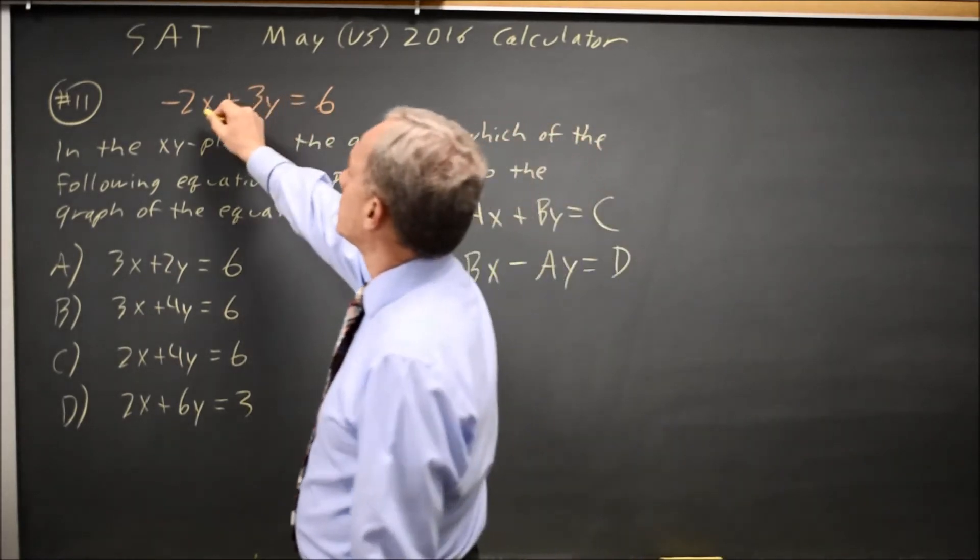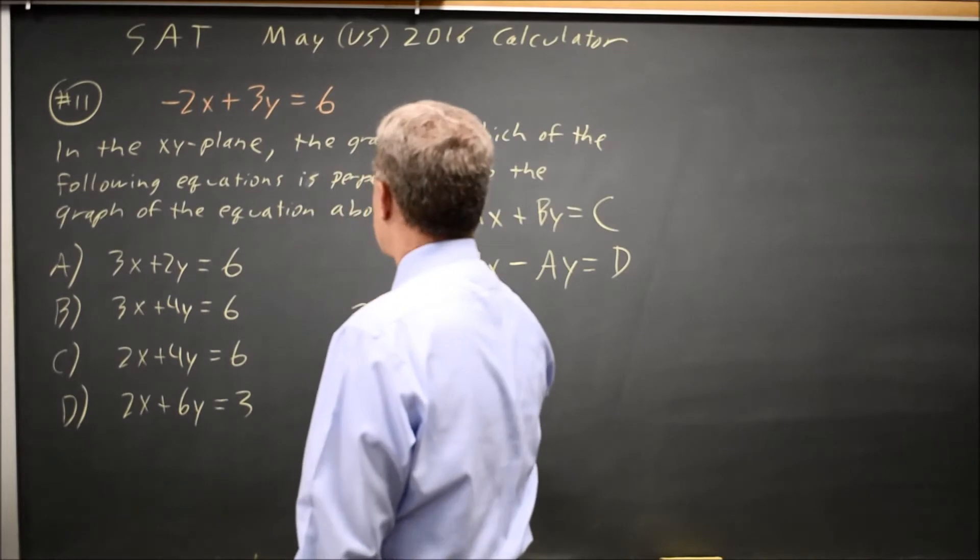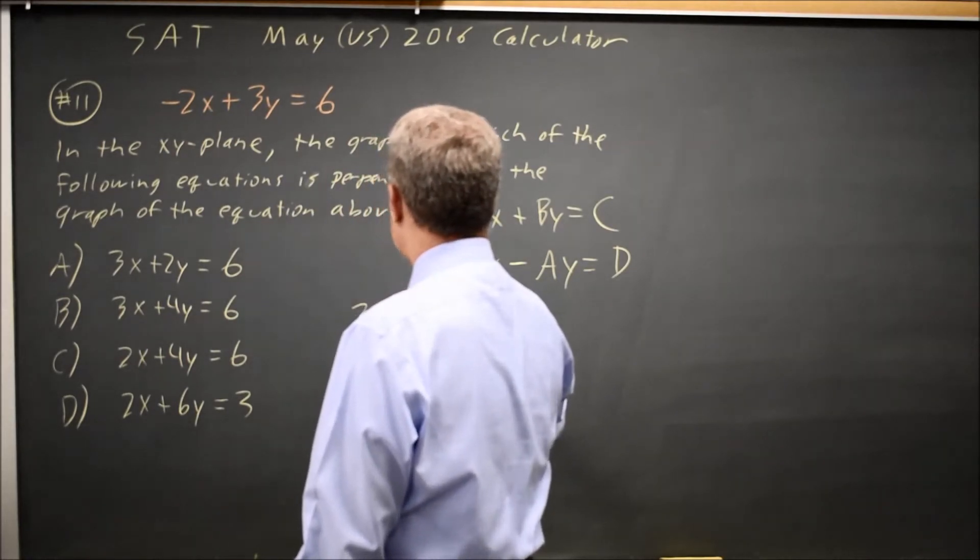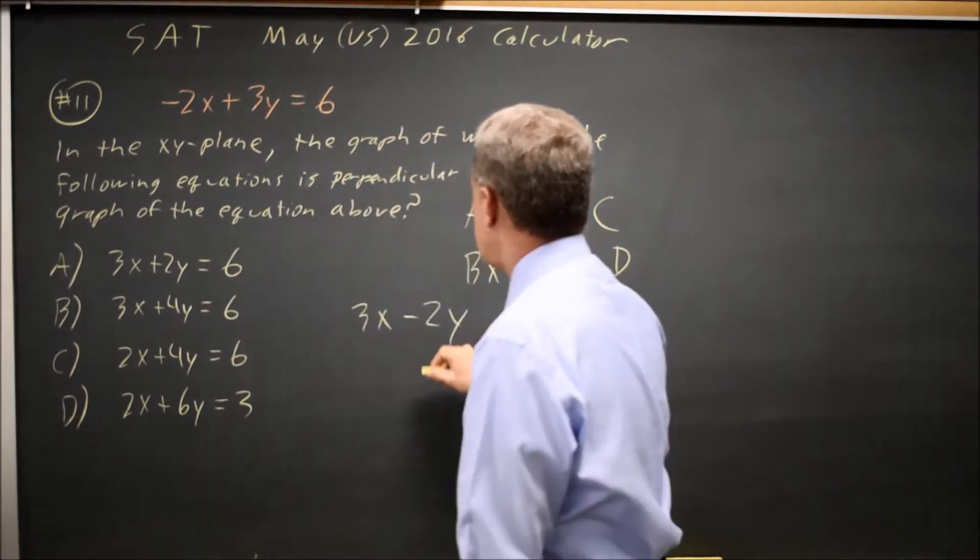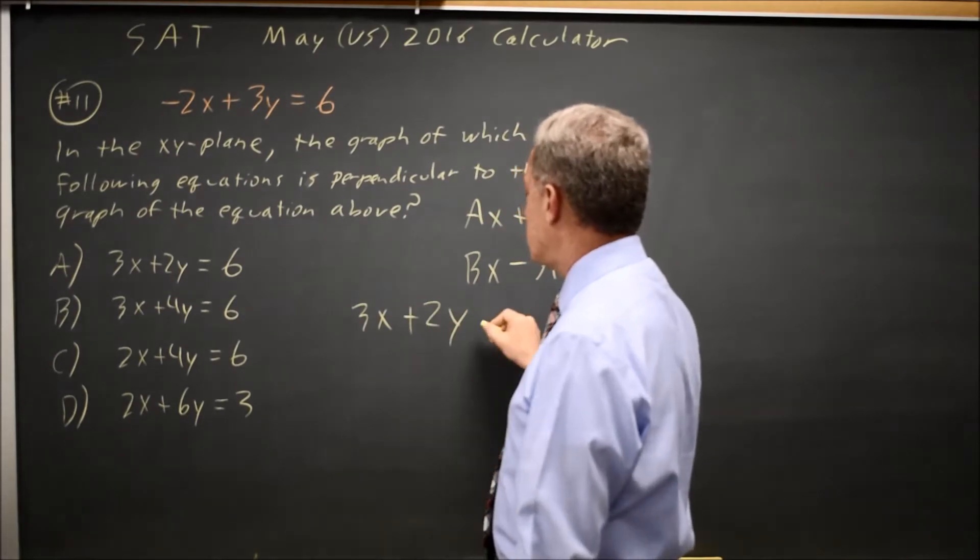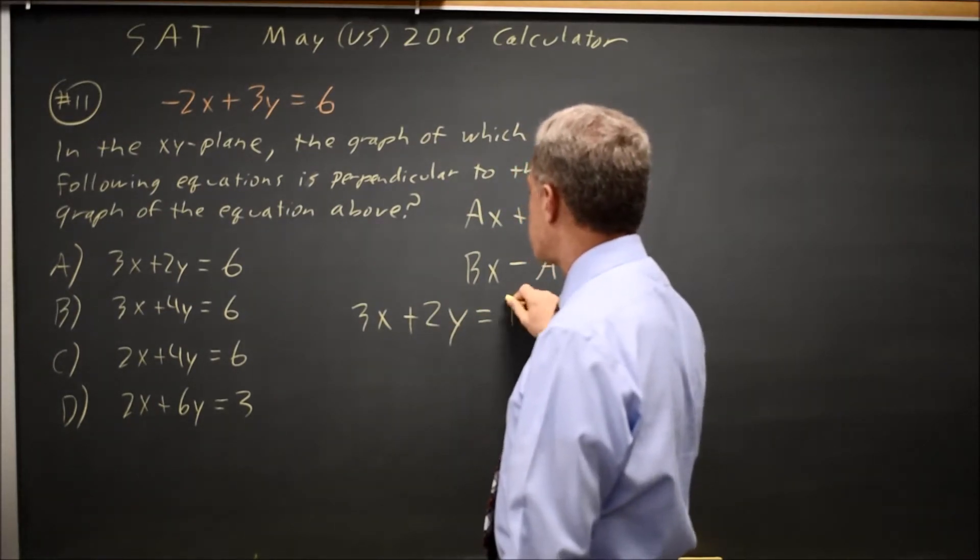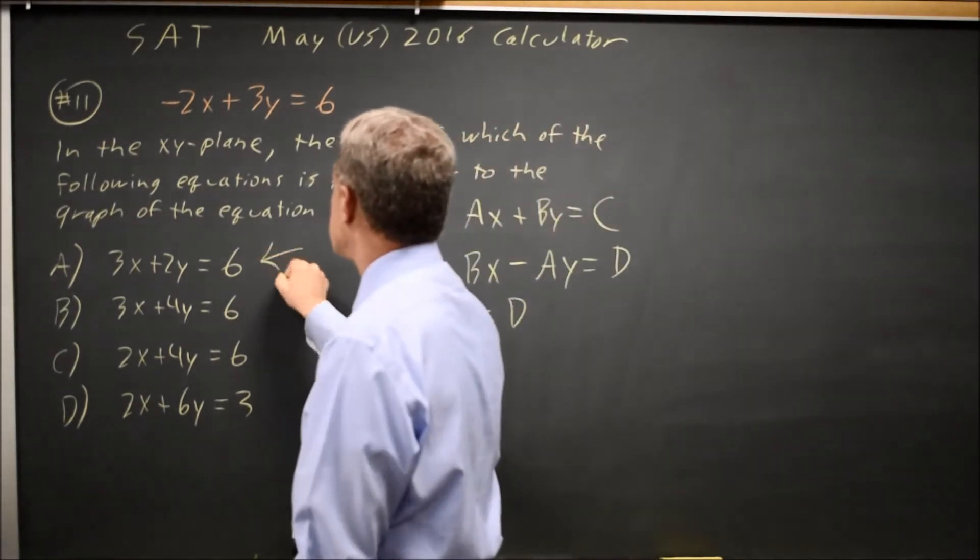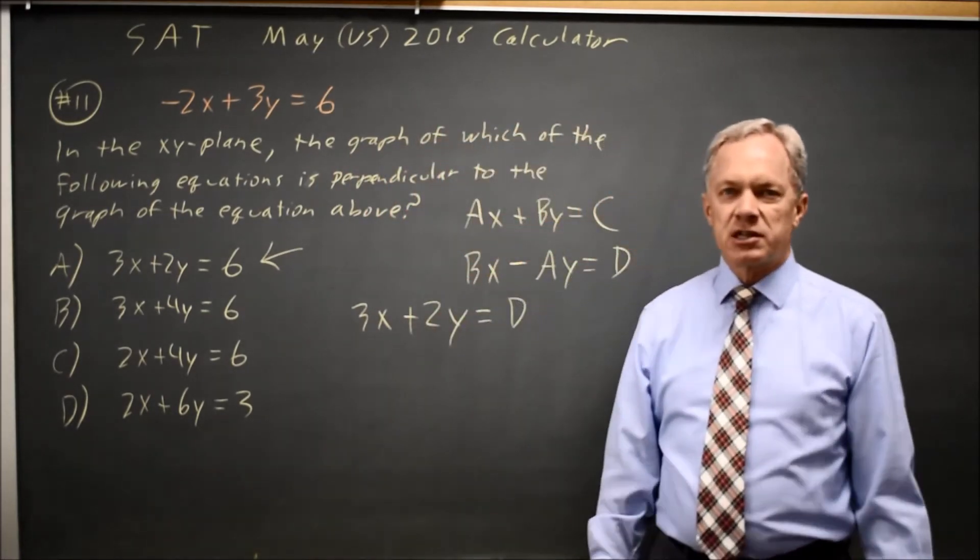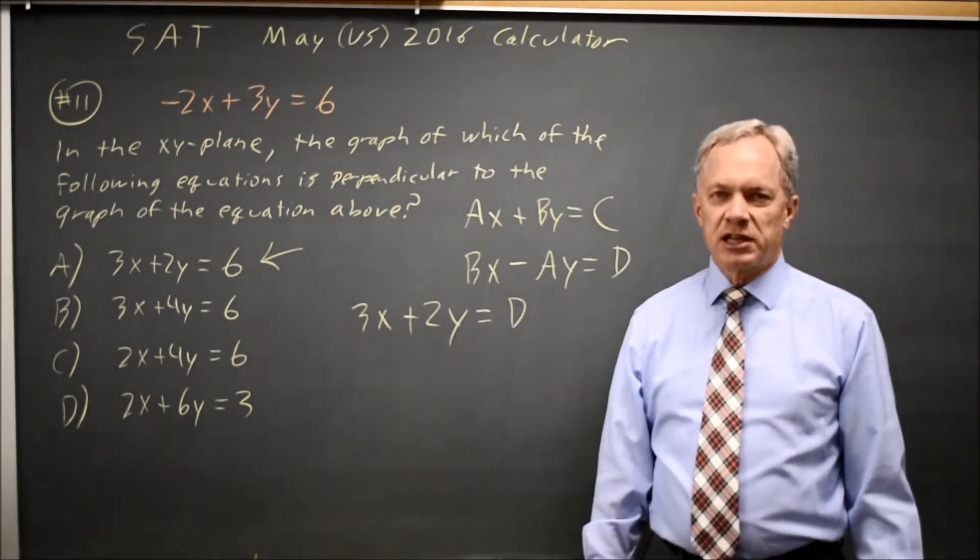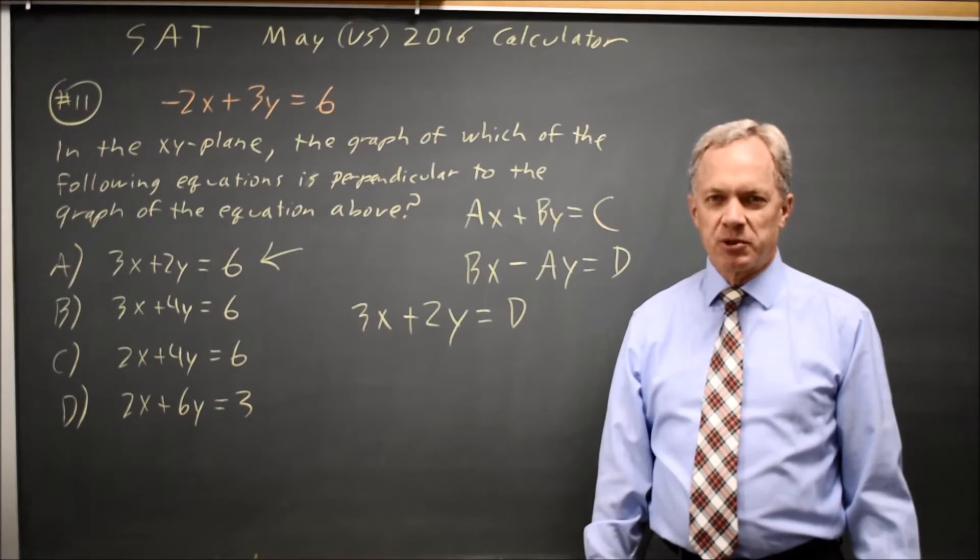So if I swap the negative 2 and the 3, I get 3X and negative 2Y, and then I flip the sign on the negative 2. 3X plus 2Y equals any constant. That would be choice A. That's the fast way to do perpendicular lines when you have standard form AX plus BY equals C.